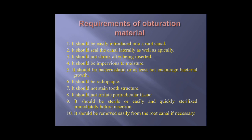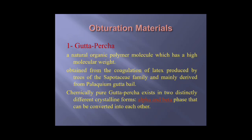We have three obturation materials available: the commonly used gutta-percha, the previously used silver cones, and a newer material called resilon. Gutta-percha is the most commonly used material — it is a natural latex material derived from certain trees called Palaquium gutta, from which the main gutta-percha is derived.